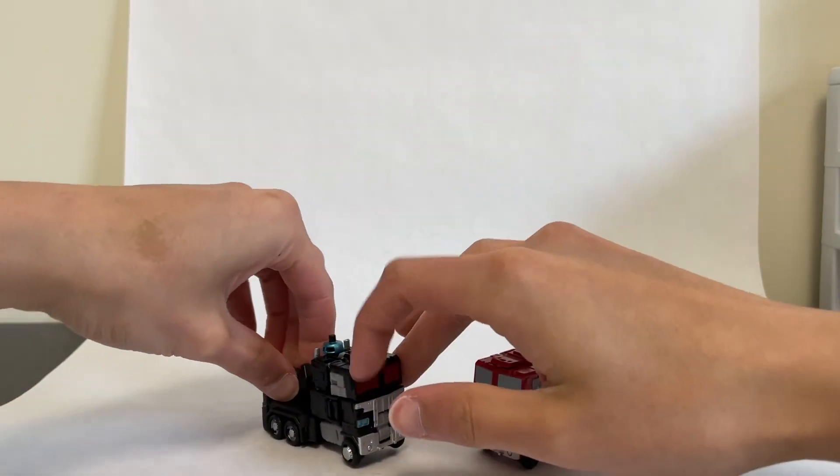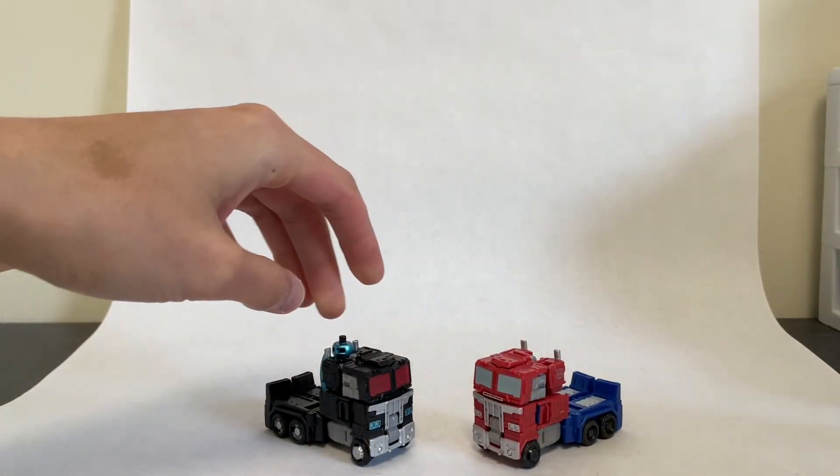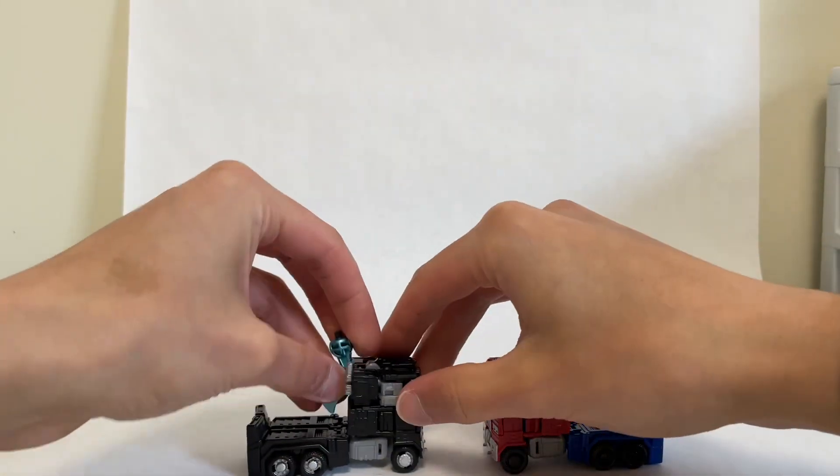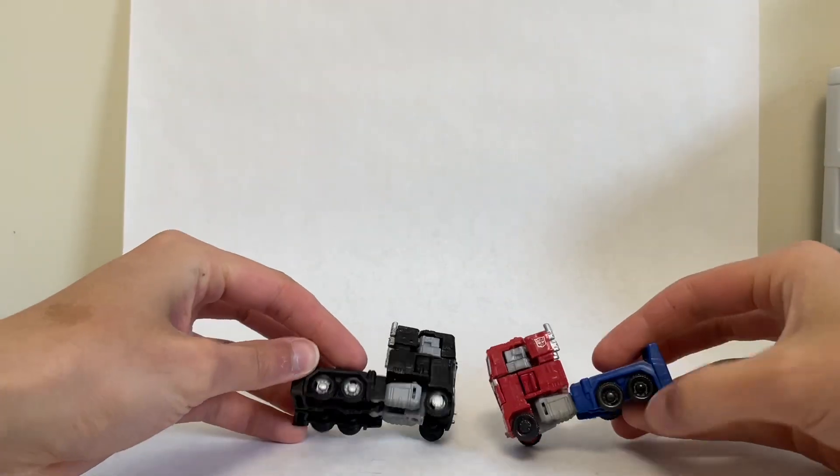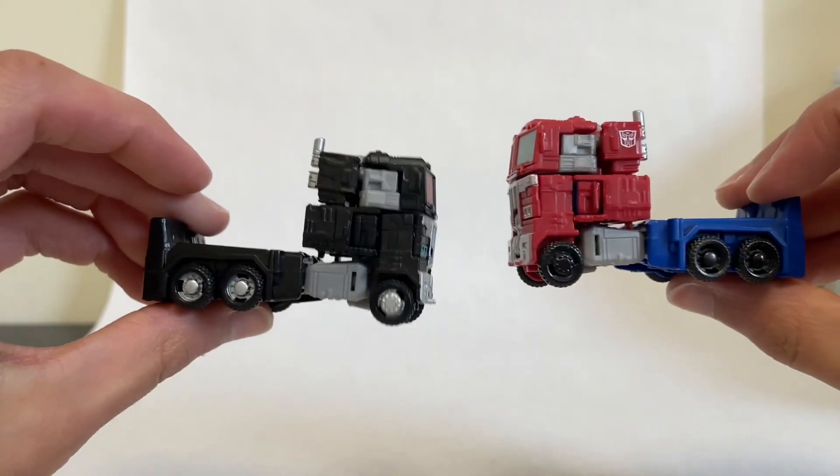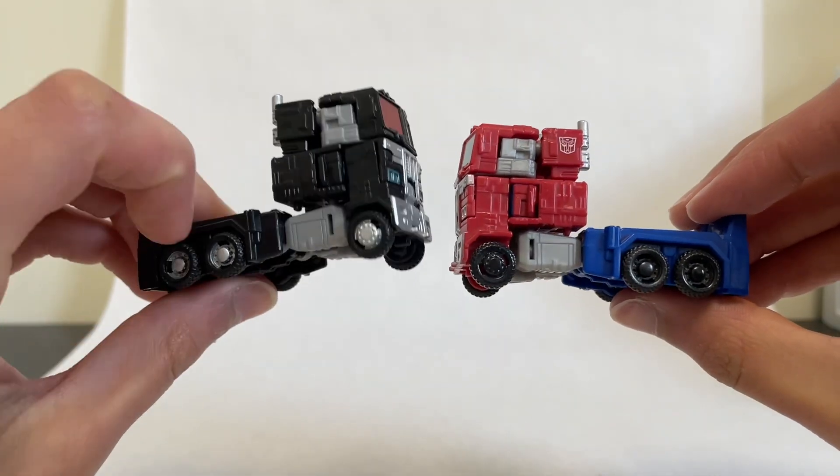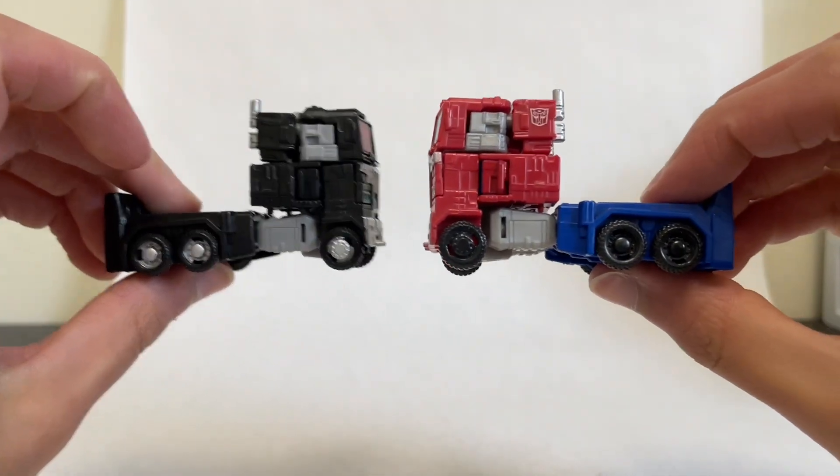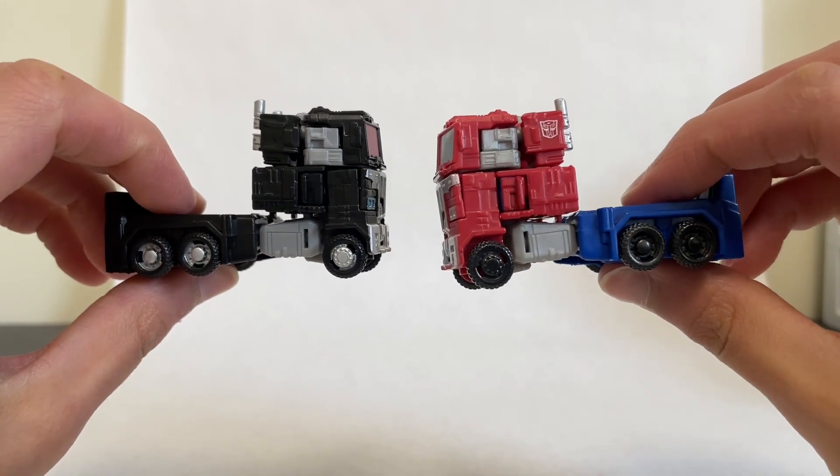And rolling in the standard core Optimus prime release. You can see them side by side. Give him his gun. Take the axe off too. You can see differences in paint applications here for the two. So you see the silver rims on nemesis, where it's just no paint on those wheels.